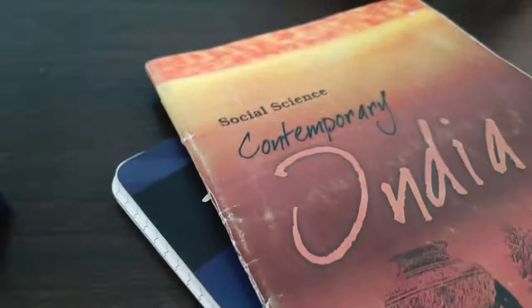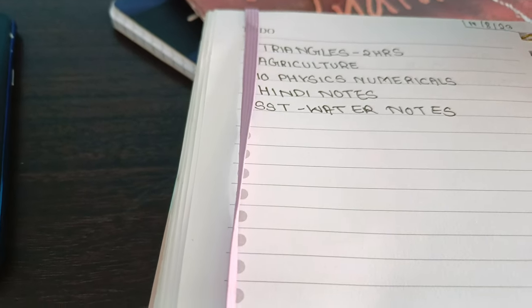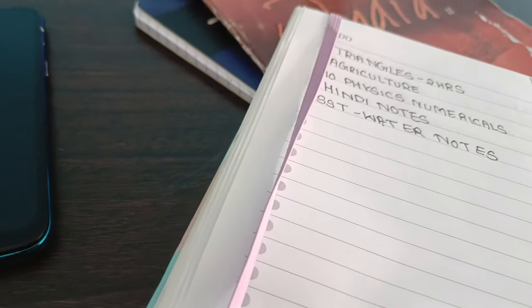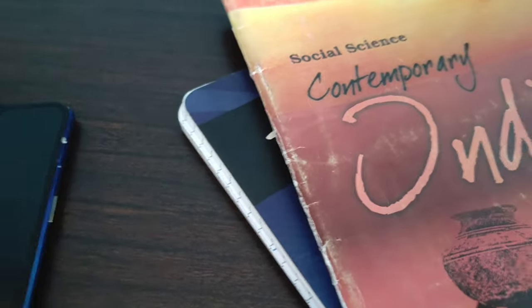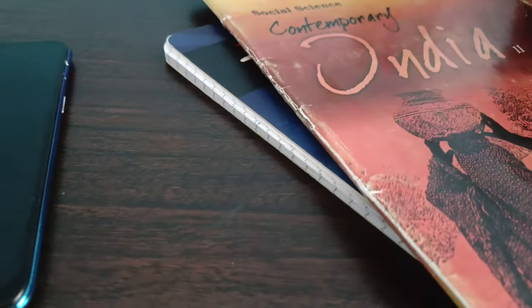This is my to-do list for today. I'll do triangles for two hours, then agriculture, then numericals. I have a lot of notes to write from Hindi and SST and I think all of this is going to take six hours.